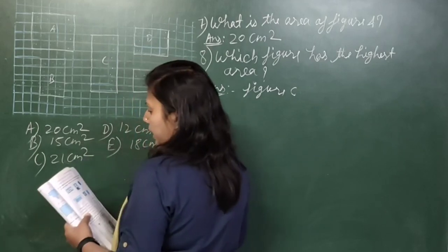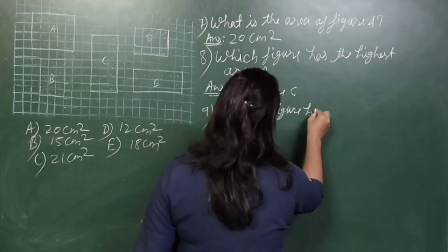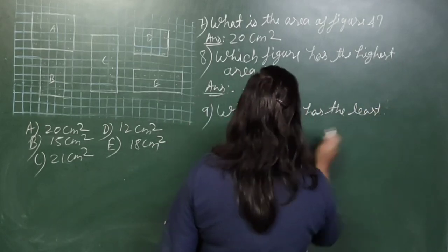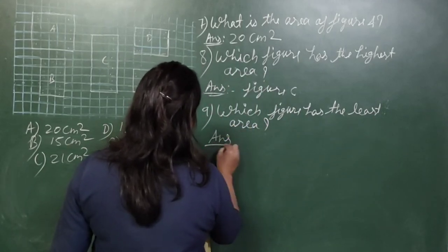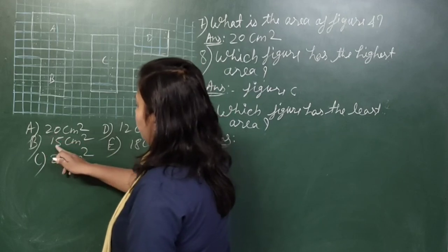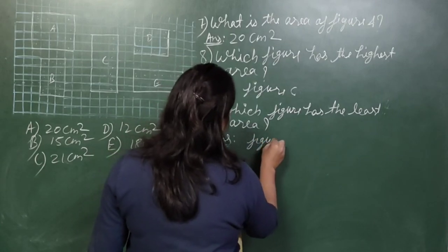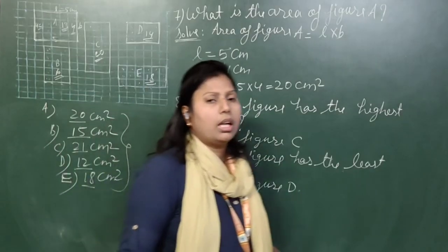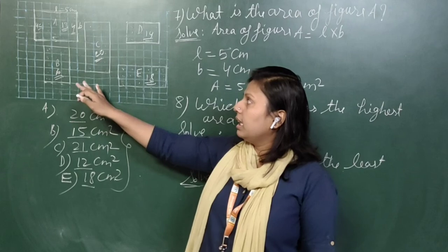Question number 9: Which figure has the least area? Comparing all areas again: 20, 15, 21, 12, 18. The least value is 12, so figure D has the least area. Write in your workbook: figure D has the least area.